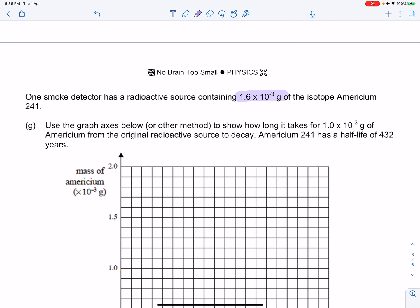Use the graph or other method to show how long it takes for 1.0 × 10^-3 grams of americium from the original radioactive source to decay. Americium 241 has a half-life of 432 years.